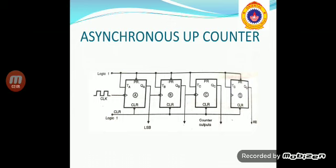We will begin our discussion with asynchronous up-counters. Here, we have made use of 4 T flip-flops. We can see that the external clock signal is given to the first flip-flop, which is labeled as A. The output of this flip-flop acts as the LSB — that is, the least significant bit of the counter. The output QA of the first flip-flop acts as the clock signal to the second flip-flop. All these flip-flops are negative edge-triggered. Since we are making use of this counter for up-counting, initially we will clear all the flip-flops. When the clear signal is activated, all the flip-flop outputs become equal to 0 — that is, QA, QB, QC, and QD are all 0. That means the first count of this counter is 0.